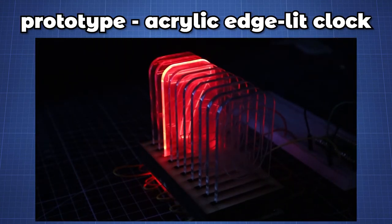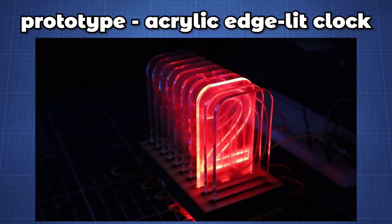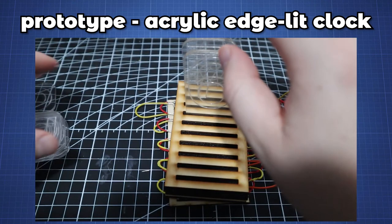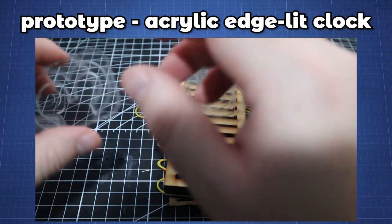The last example is part of a prototype of a project I'm working on to create an edge-lit acrylic clock. In this case we only have the digit 0 to 9 which will be expanded by adding more to display hours, minutes and seconds.